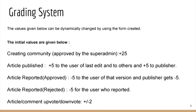This is the reputation dashboard. All these values can be dynamically changed by the system admin. When a community creation is approved by the super admin, the person who created the community gets plus 25 points. Once an article gets published, the user of the last edit gets plus 5 and the publisher gets plus 5. If the community admin approves a reported article, the user of that version gets minus 5 and the publisher also gets minus 5. If the article report is rejected, all users who reported it get minus 5. If an article is upvoted or downvoted, the author gets plus or minus 2 respectively.